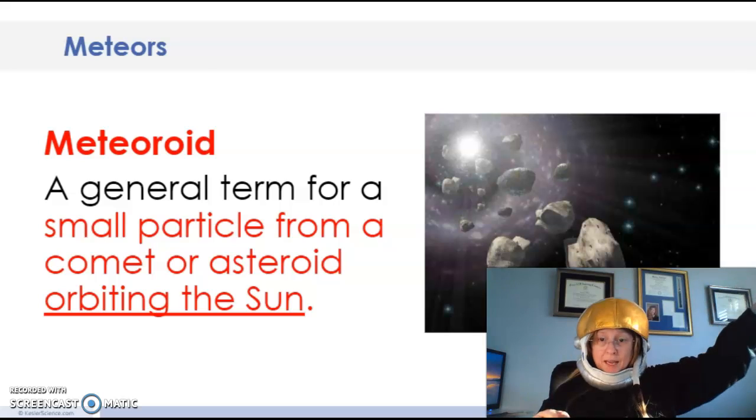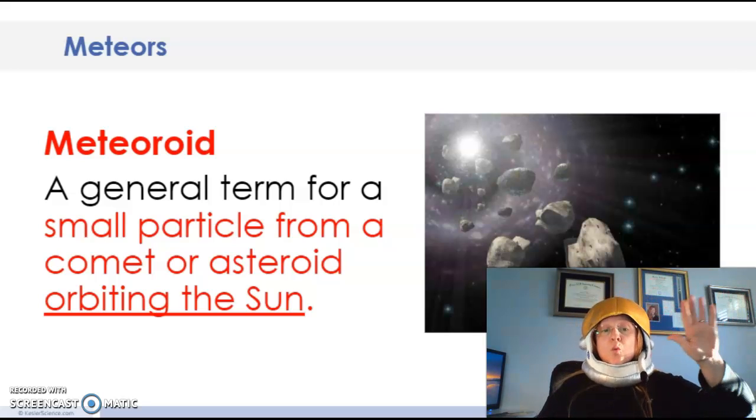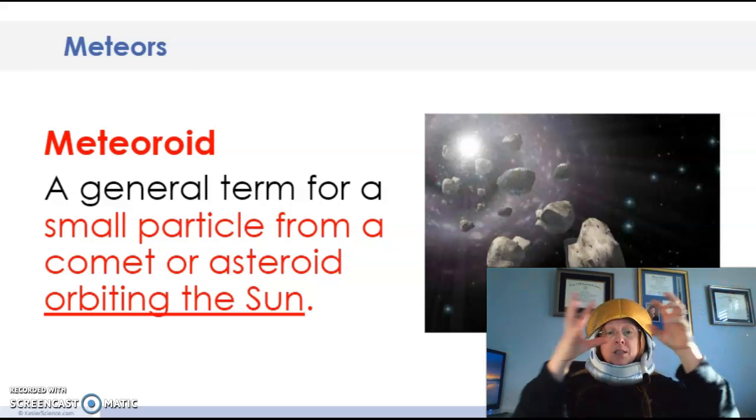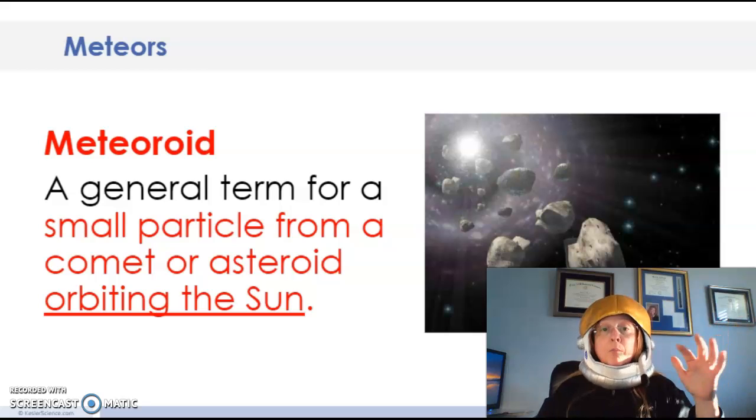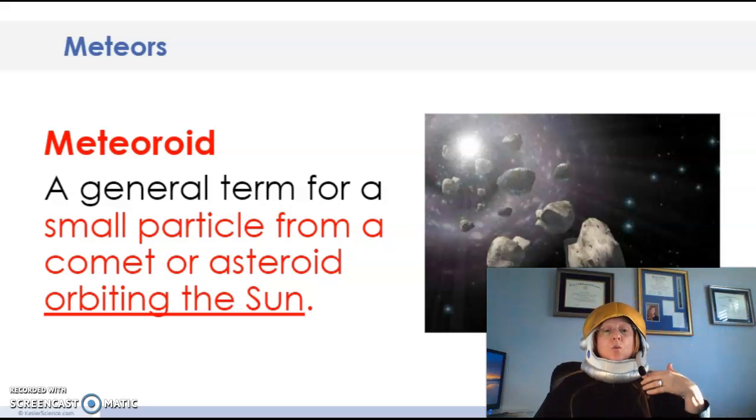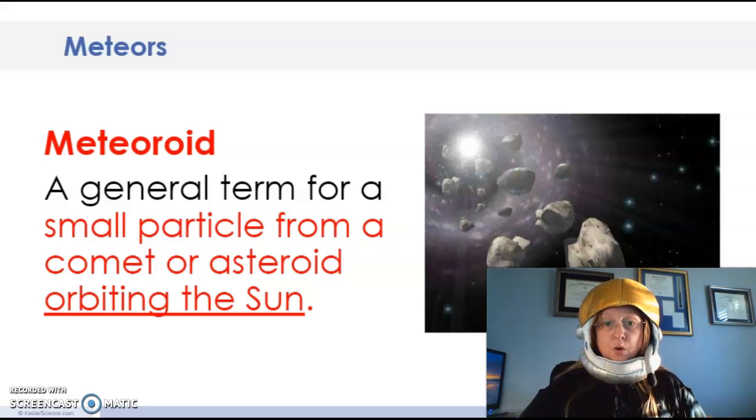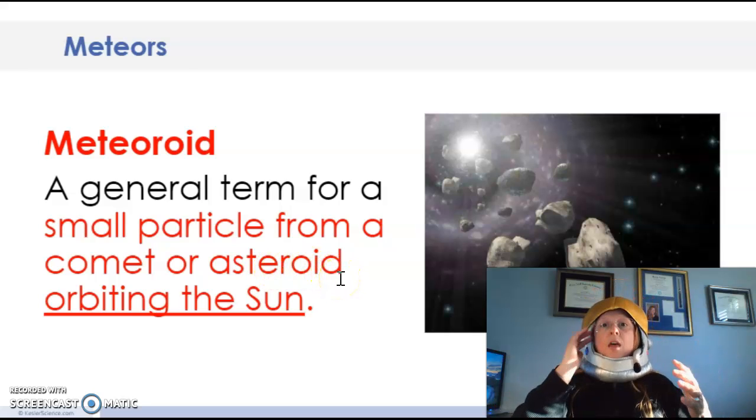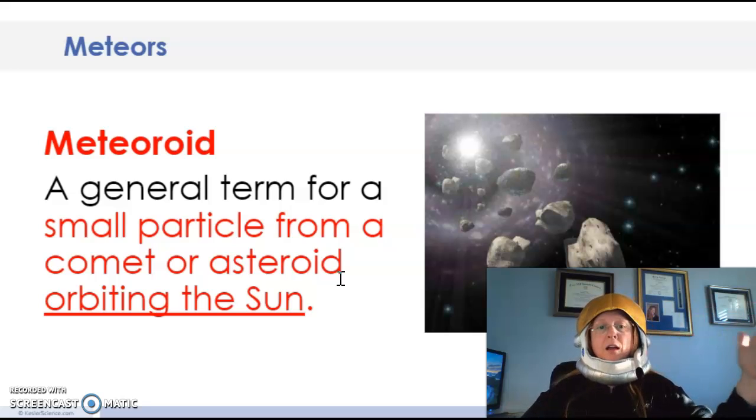So we're going to actually start out in space where comets and asteroids are orbiting the sun. When comets and asteroids are orbiting the sun, sometimes small particles of them will fall off, and that's what we call a meteoroid. So when it's out in space orbiting the sun, it's just broken off from a comet or asteroid. We call it a meteoroid. So look at that 'roid' at the end of meteoroid and that 'roid' at the end of asteroid, and maybe that will help you remember. That's when you call it a meteoroid, when it's out in space floating around like comets and asteroids do.